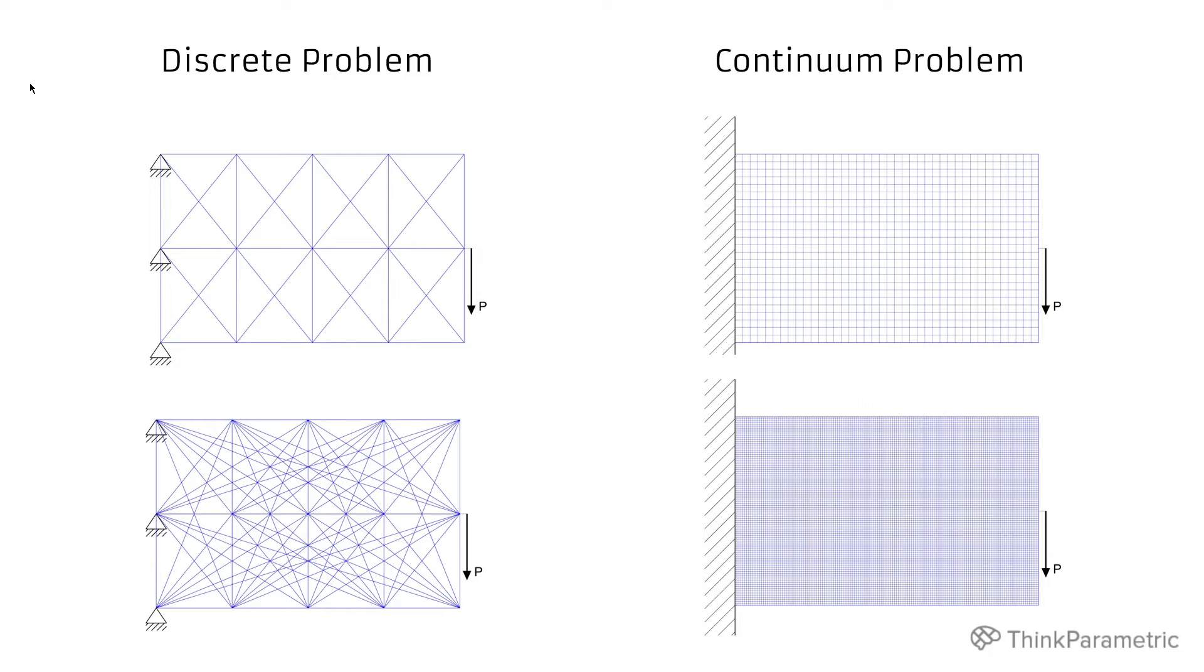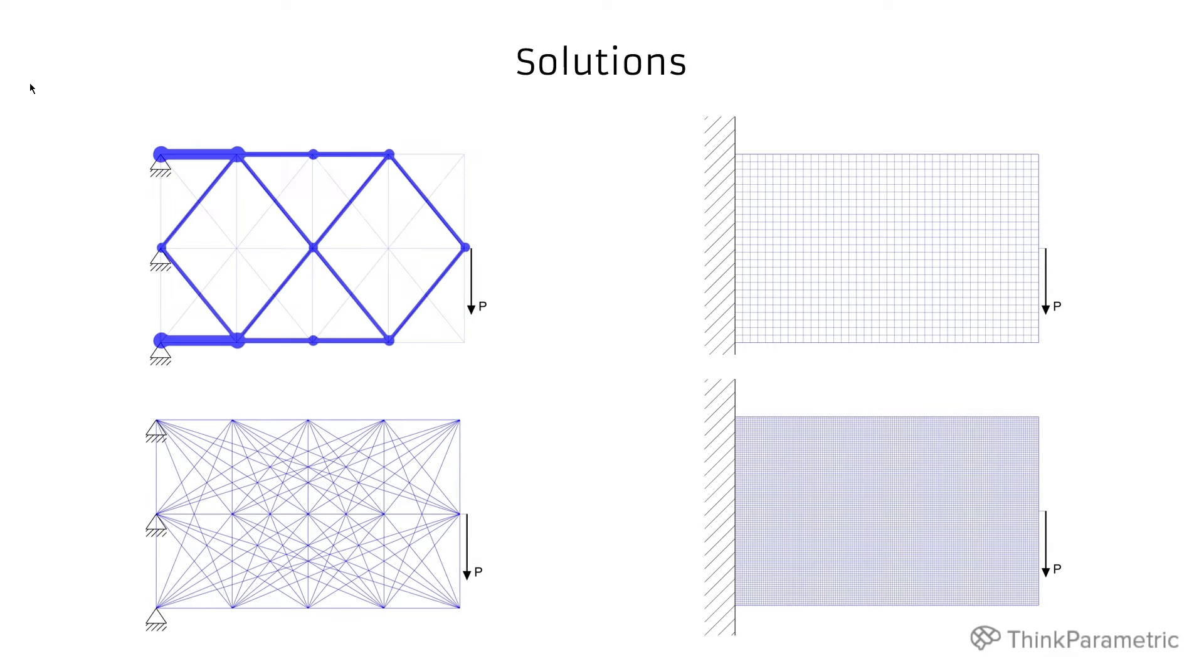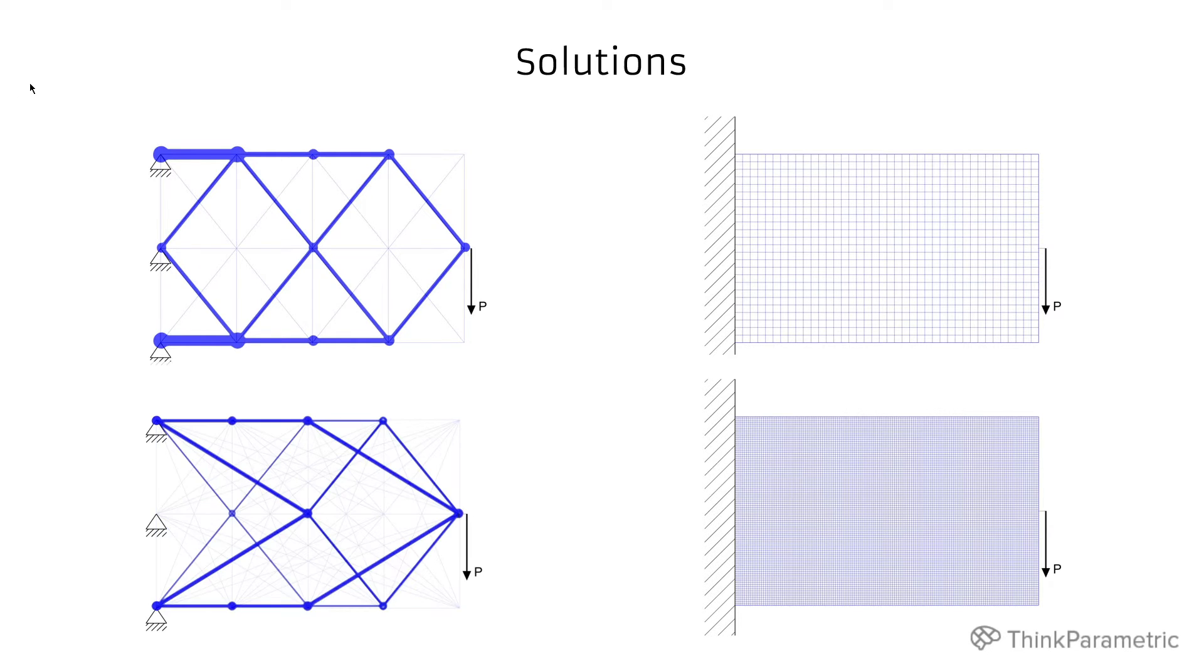So let's have a look to solutions that topology optimization would find for this kind of problem. For the first one this is what our algorithm come up with. Within given material volume these bars should stay from the initial ground structure. If we have a different initial layout the solution will be slightly different. Also the performance could be different but the volume constraint stays the same.